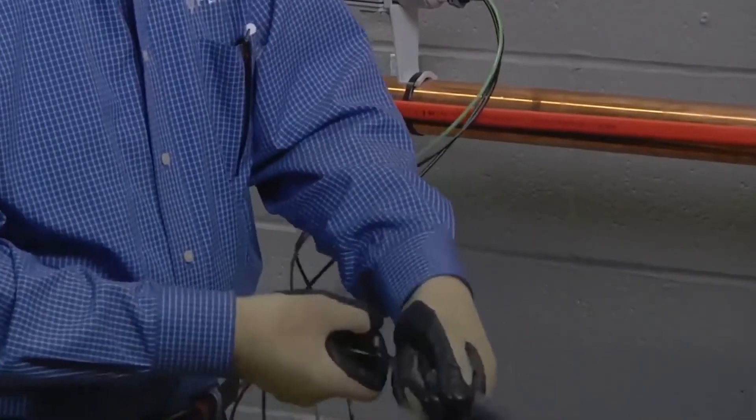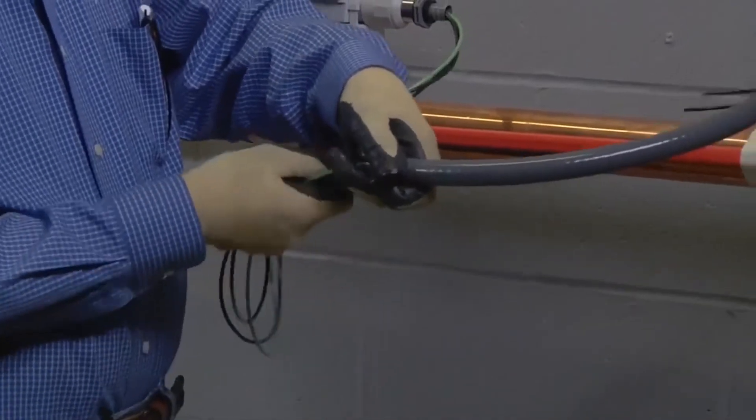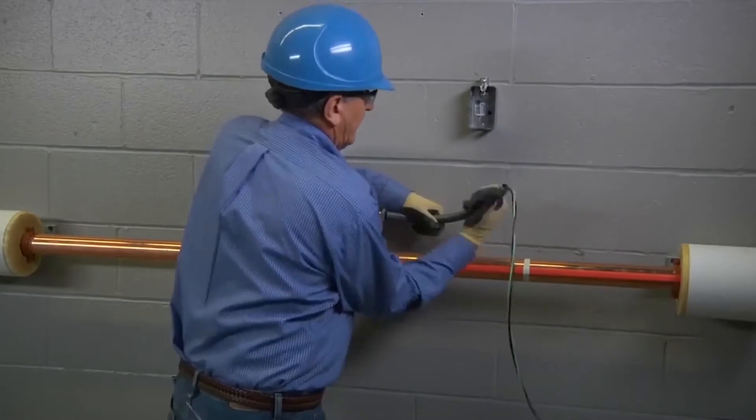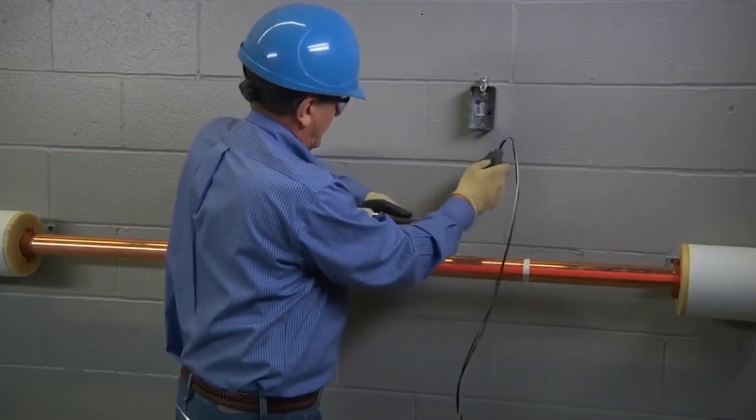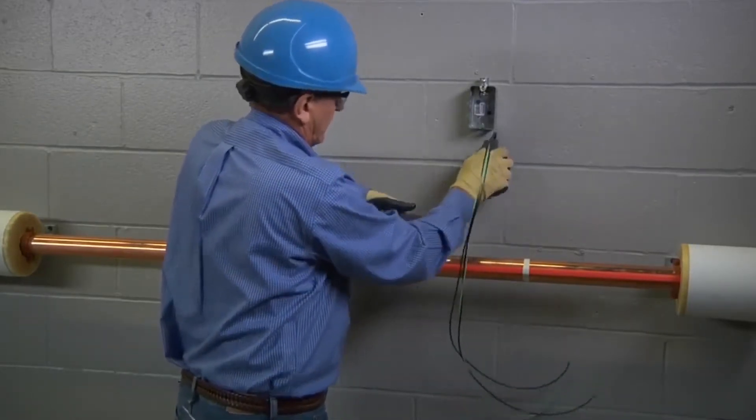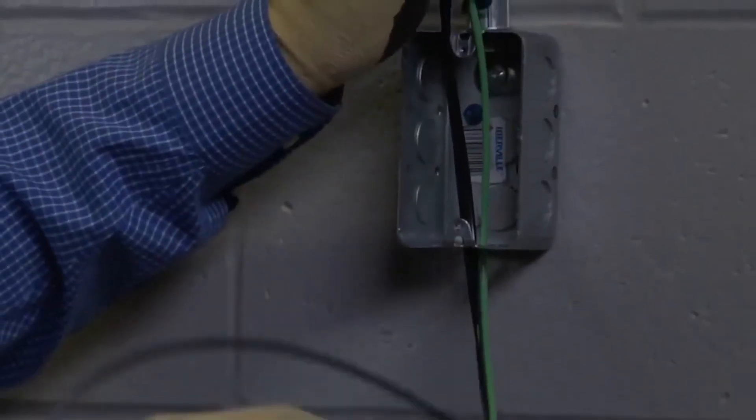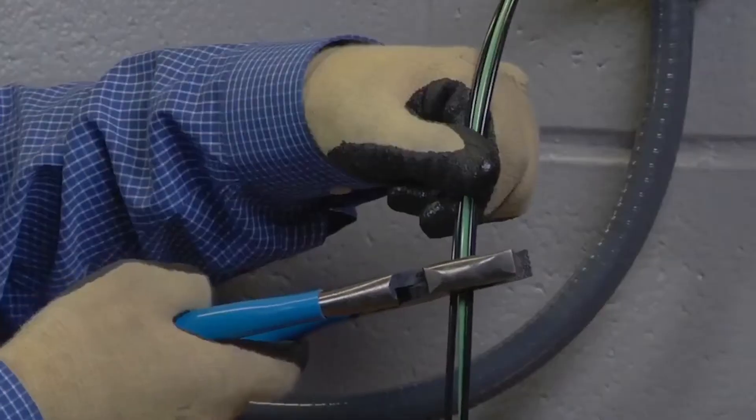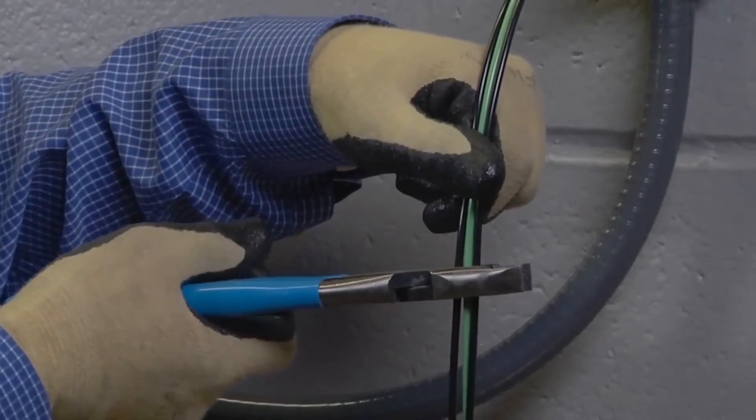Now, attach a ½ inch flexible conduit from the fitting in the RayClick PC to a 2 x 4 inch junction box located within 6 feet of the RayClick PC. Fish the wires from the RayClick PC through the conduit up to the junction box, leaving at least 6 inches of wire in order to make final connections to line voltage.